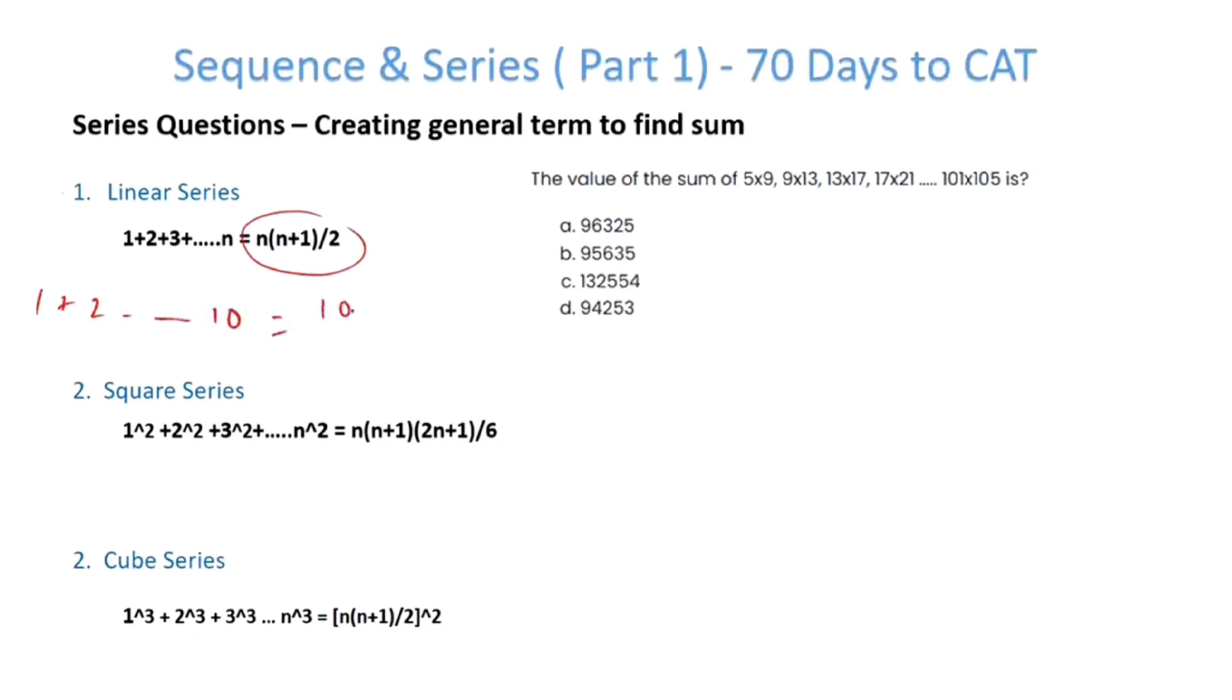In the square series, if I add the squares of all the natural numbers till n, that becomes n(n+1)(2n+1)/6. So 1² + 2² + ... + 10² becomes 10×11×21÷6.